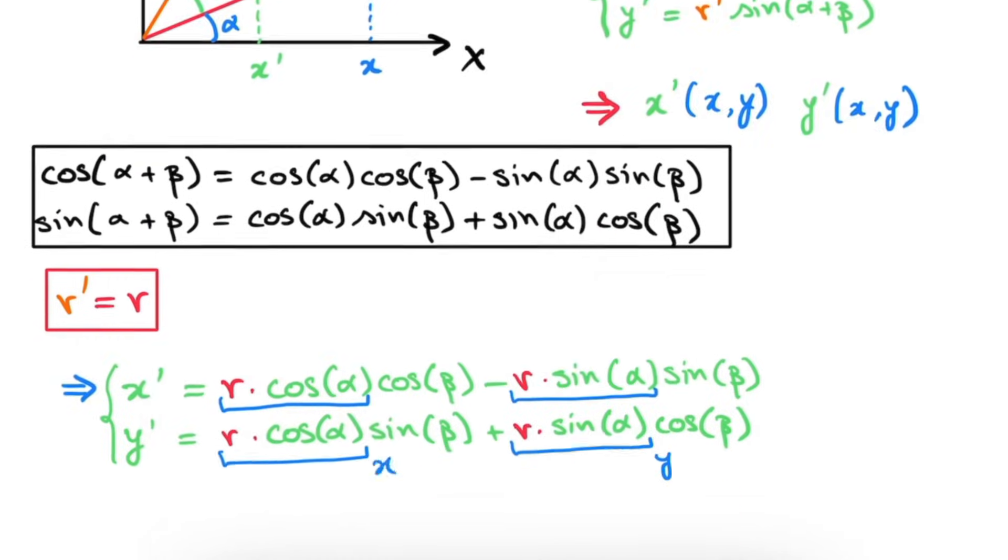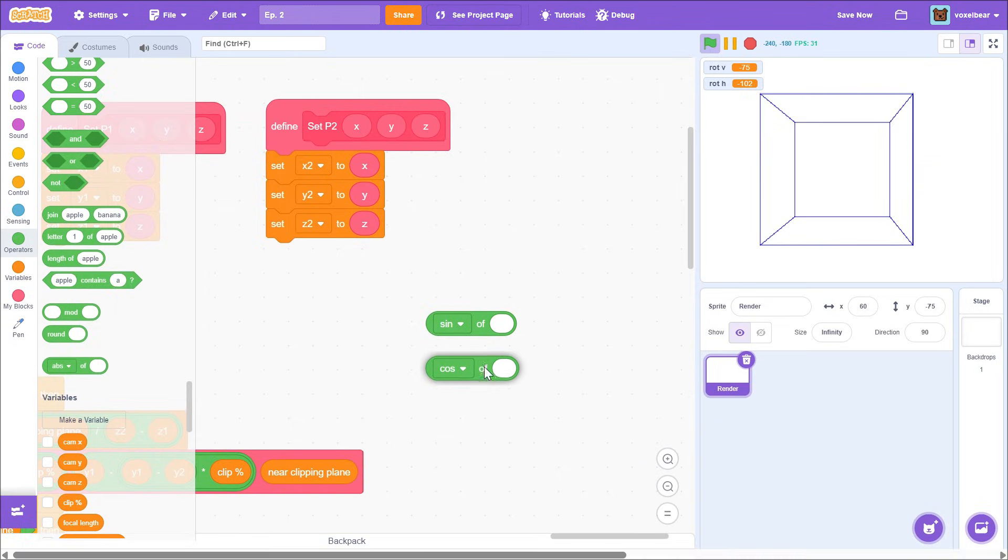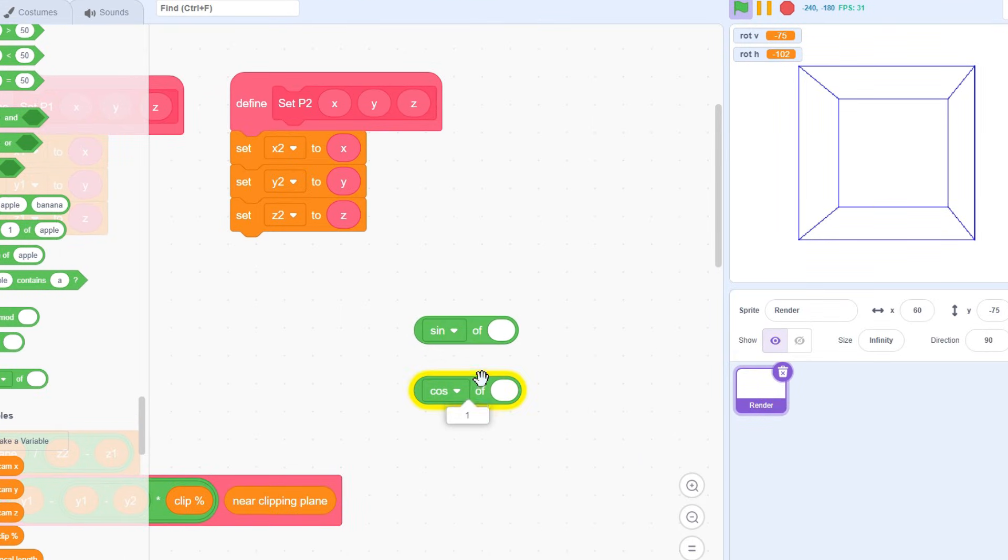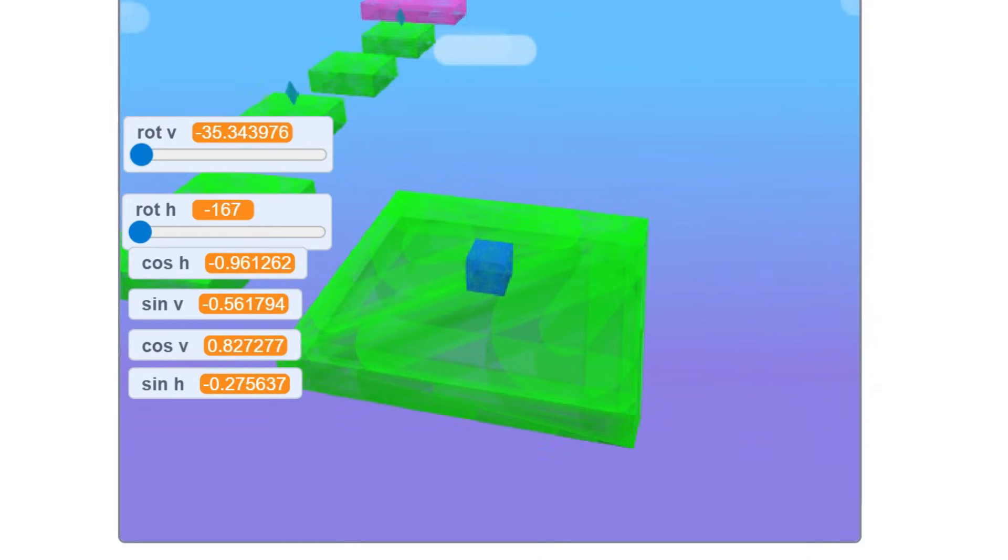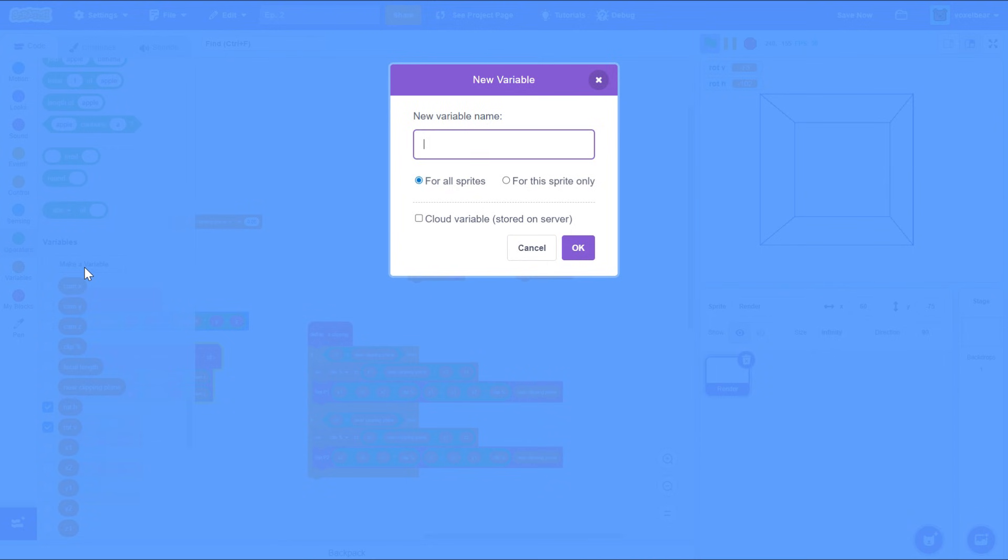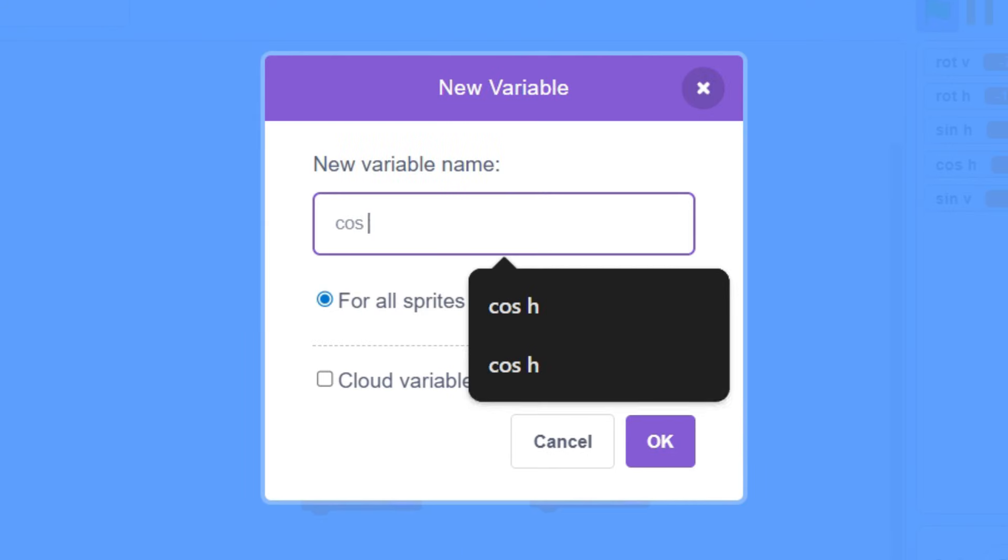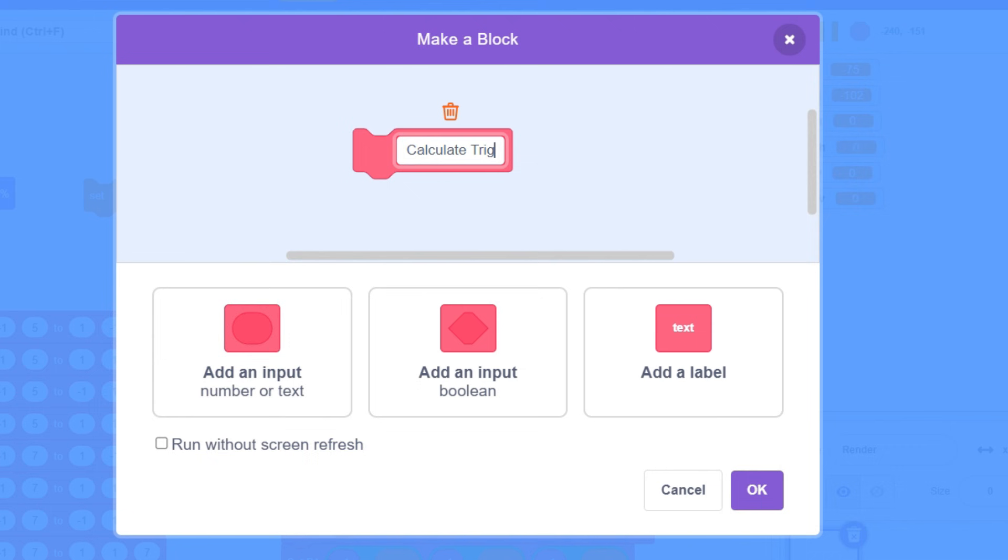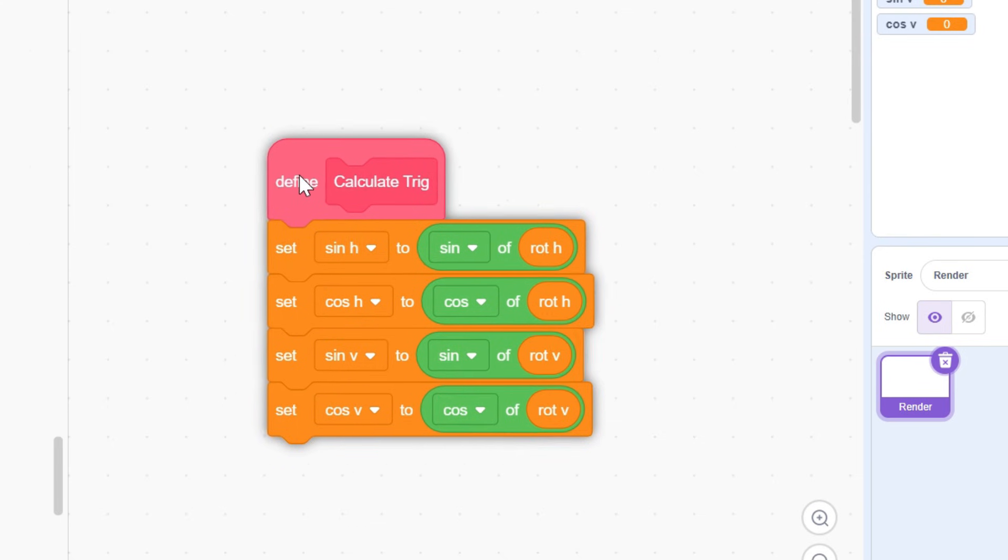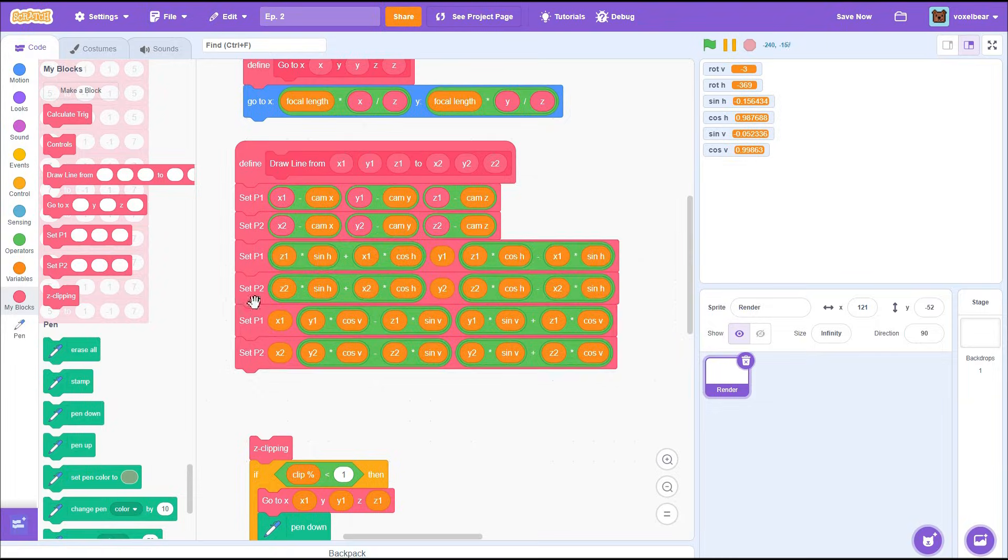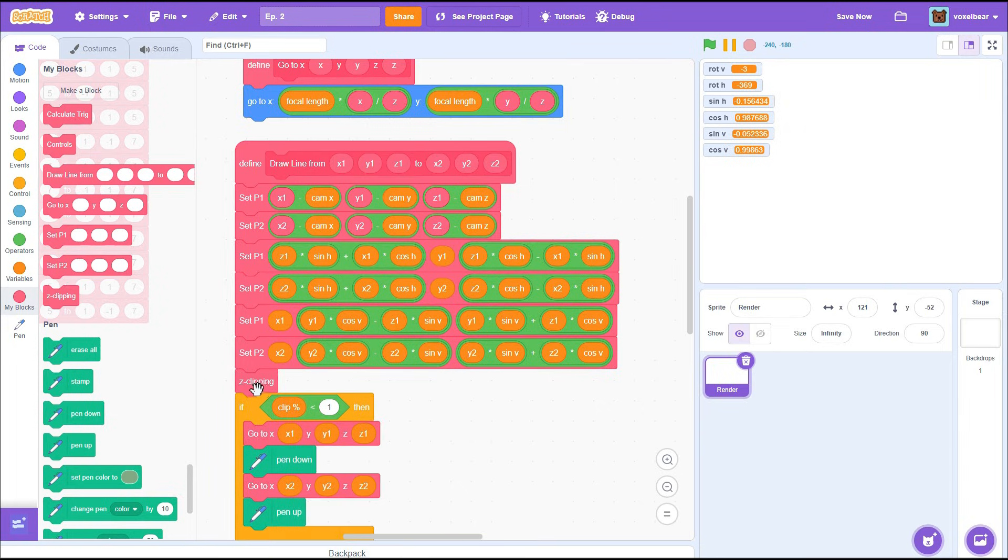which clearly explains all the math behind it. Now we're gonna be using sine and cosine quite a lot on rotation, and repeatedly computing all of these functions takes up a lot of memory and causes lag. Instead, we should only do it once per frame. So let's create 4 variables, sine h, cos h, sine v and cos v, and a new block, calculate trig. Next, we wanna set the variables to their corresponding trig values, then just sub in these values in the formula we talked about earlier.